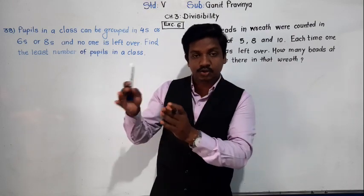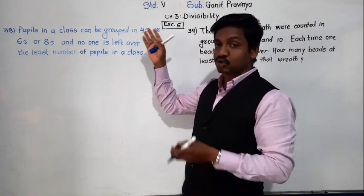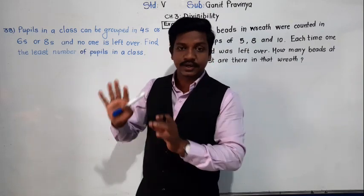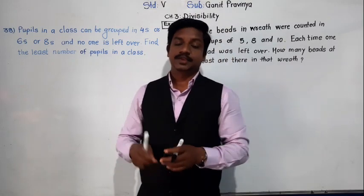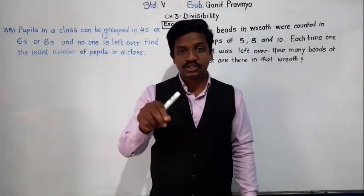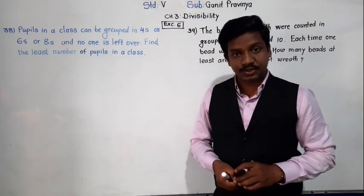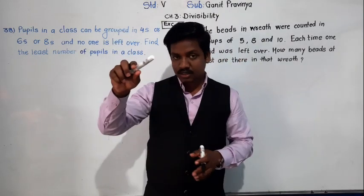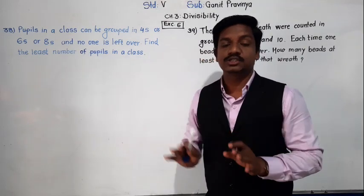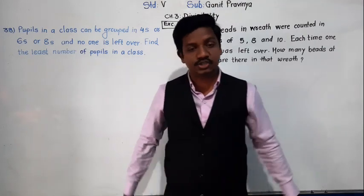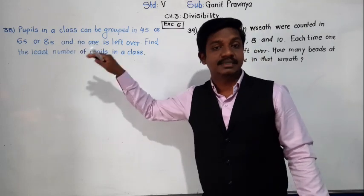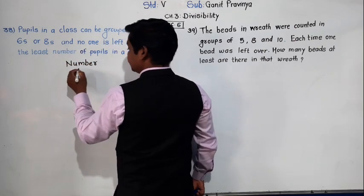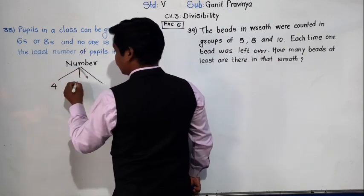If we want to make a group of students, we can make a group of 4 students where exactly grouping is possible, or we can make a group of 6 students where exactly grouping is possible, or a group of 8 students where exactly grouping is also possible. So such number of students were there in the class. And no one is left over.